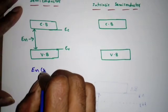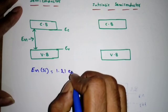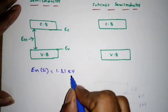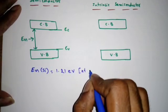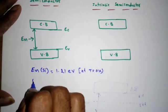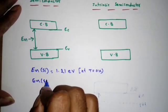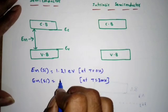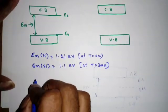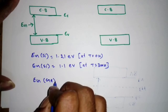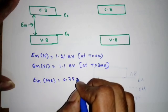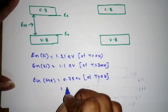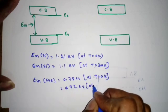The energy gap between the conduction band and valence band is Eg. For silicon, Eg is 1.21 eV at T = 0 K and 1.1 eV at room temperature (300 K). For germanium, Eg is 0.78 eV at T = 0 K and 0.72 eV at 300 K. Energy gaps are always expressed in electron volts.